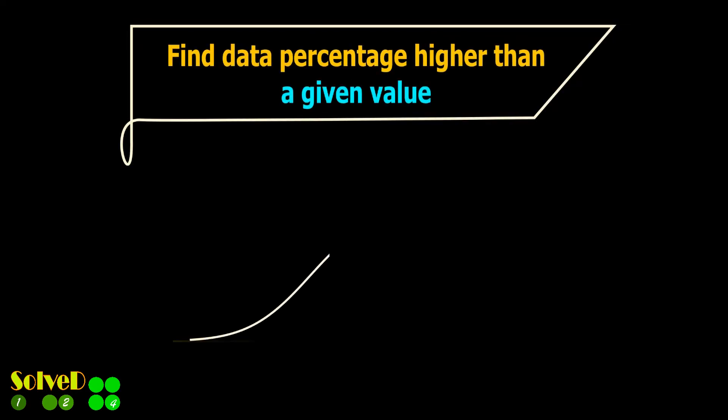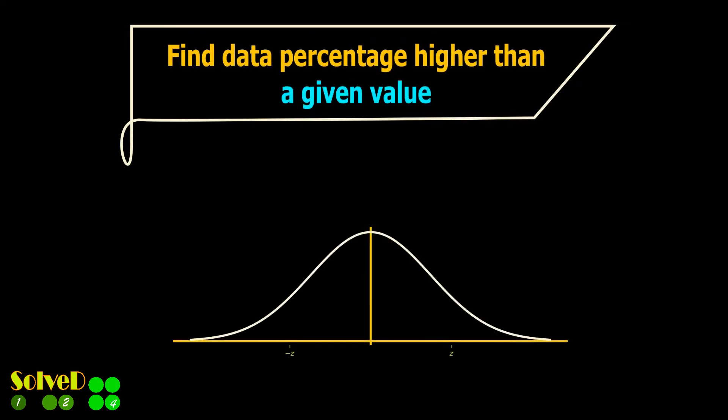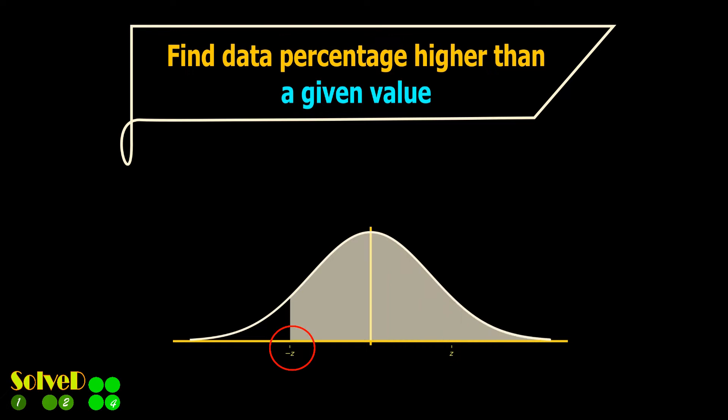Let's find the data percentage higher than a given value. Once the Z value is known, the area to the right of the Z value is the data percentage higher than the corresponding X value.